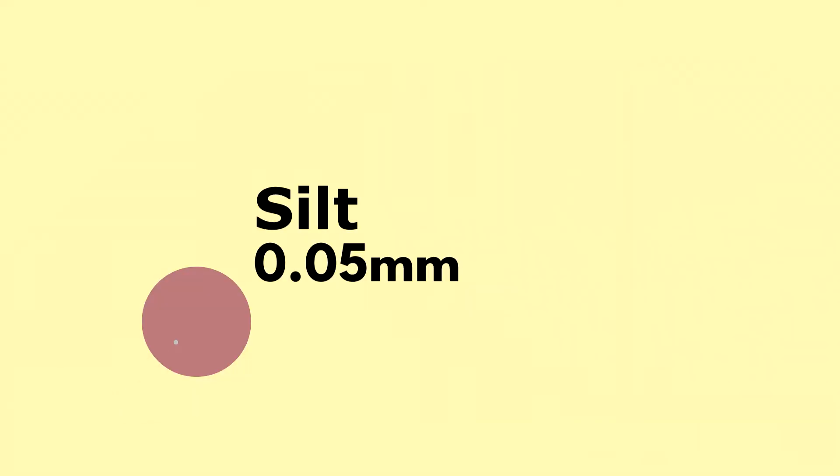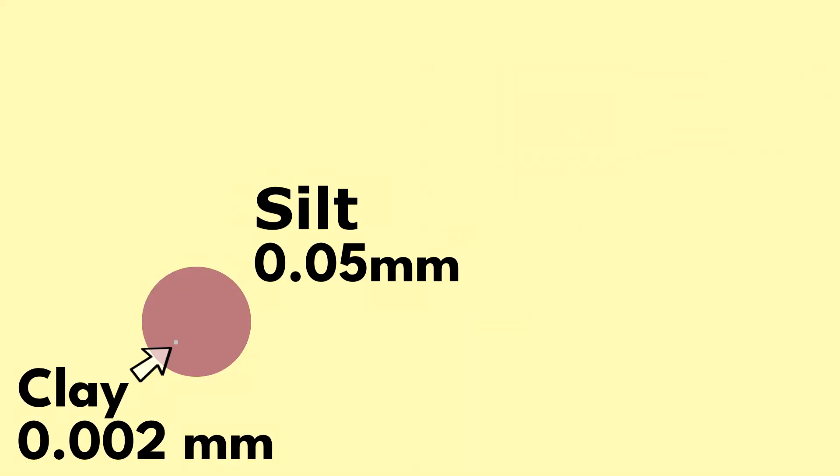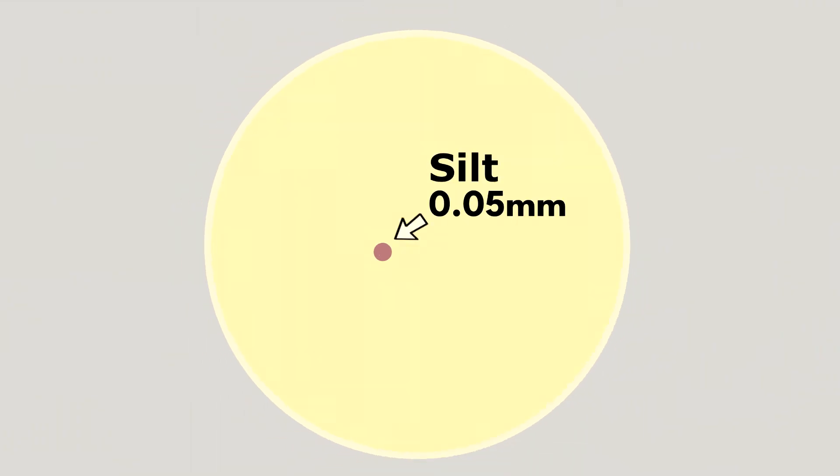A grain of silt might be 25 times larger than a grain of clay, and a grain of sand may be 20 times larger than the silt. At this scale, the clay becomes nearly invisible, and zooming out to the size of gravel, the clay disappears completely.